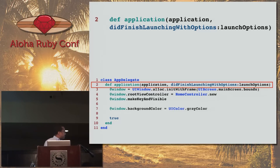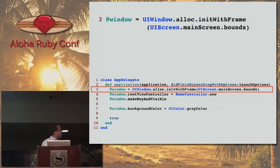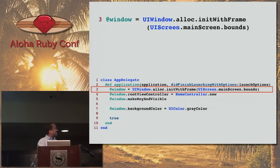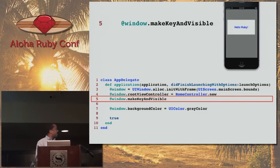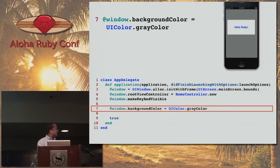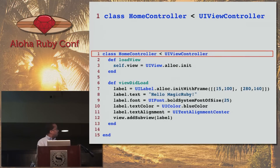Did finish launching with options — here's where we define the window. We're telling it to create a window. Alloc init is kind of like new — you're allocating as you would in C, using malloc. We're telling it to take the whole screen: 'occupy bounds' means take up the whole screen. We're assigning a root view controller, which in this case we're calling home controller. Making it key and visible: 'key' means this is the window that's going to receive user input, and 'visible' means make it visible.